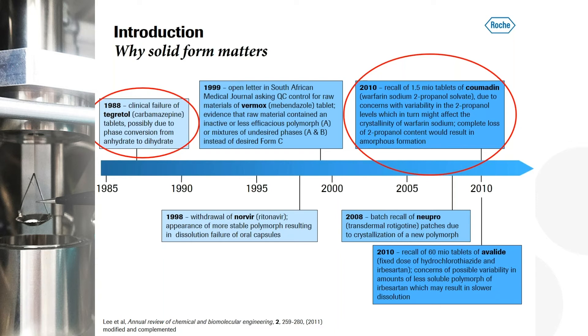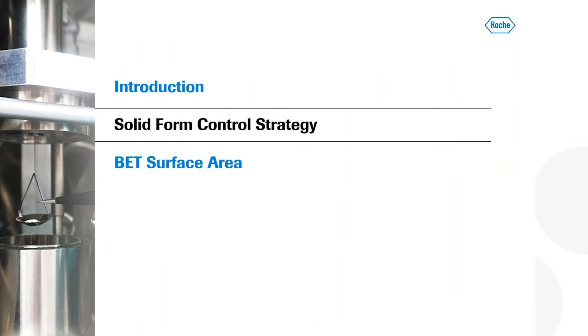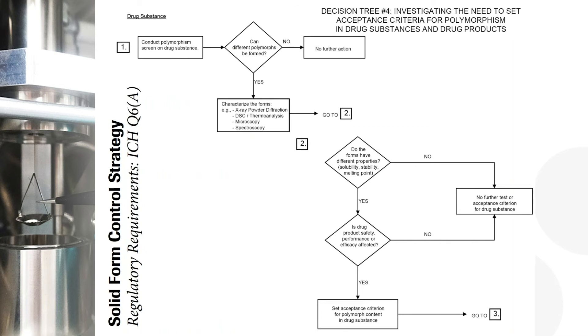And this brings me to the next part of this talk. It's about the solid form control strategy. And there is a key requirement from the health authority departments that you perform a solid form screening. And this is a more technical document in this ICH Q6A. You need to perform a polymorph screen on the drug substance. Can you define different polymorphs? If no, you're fine. If yes, you need to characterize them. I think everyone would do that in a scientific environment. You don't need to have a document for this.